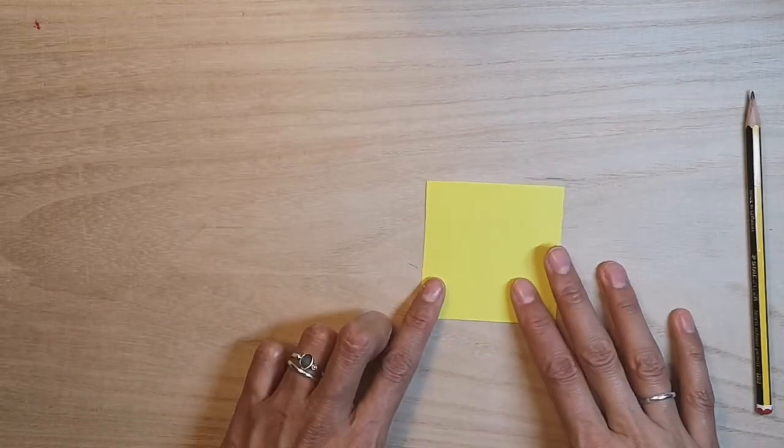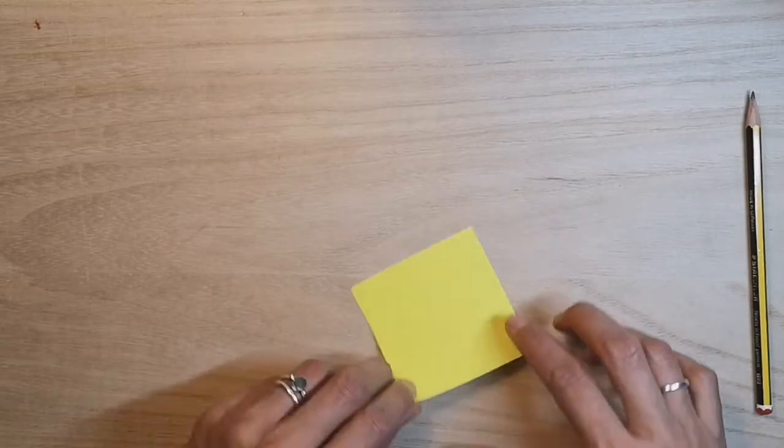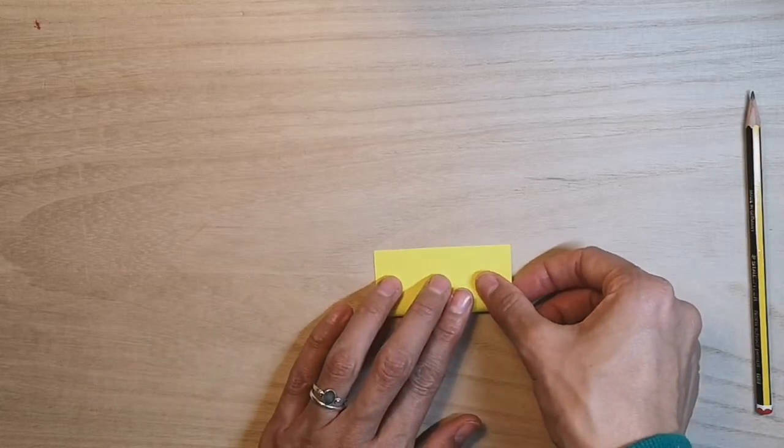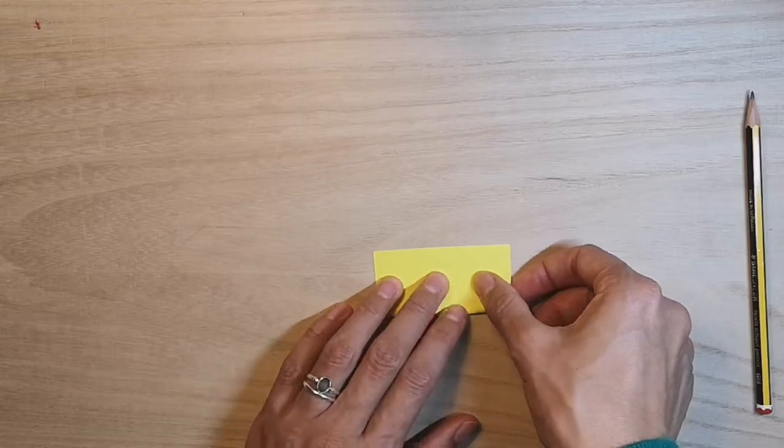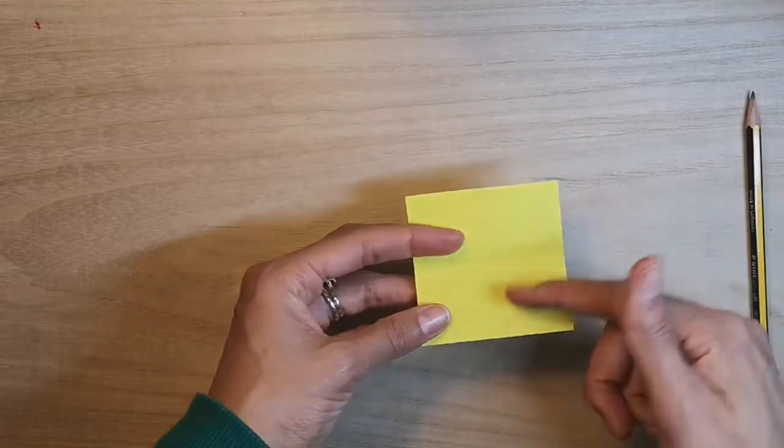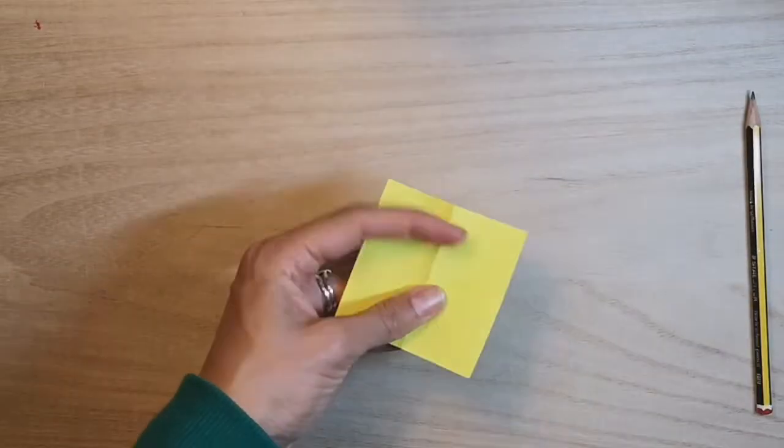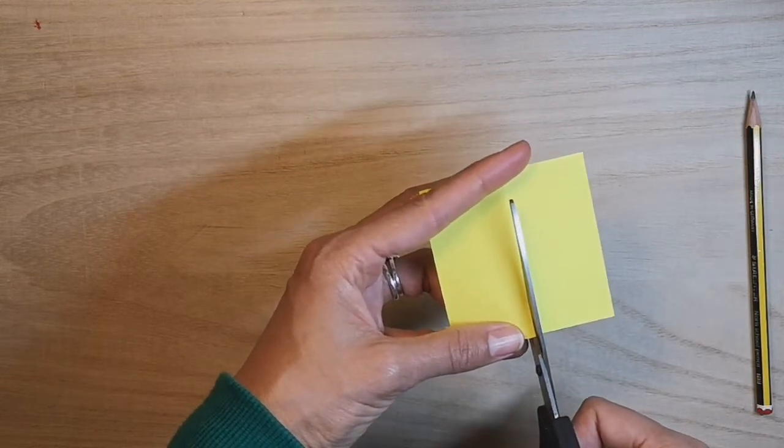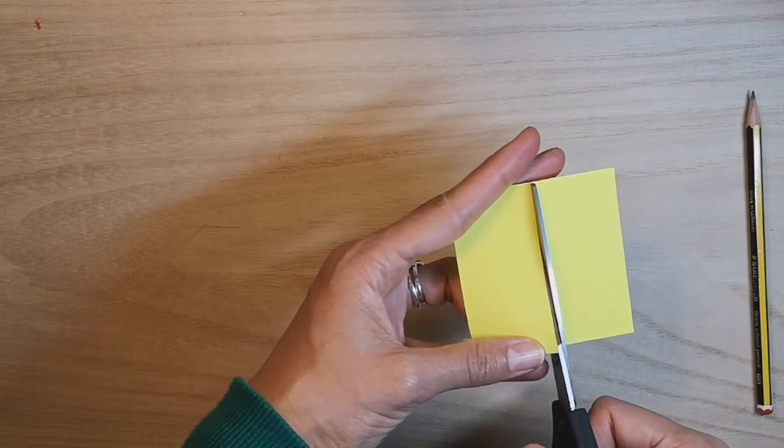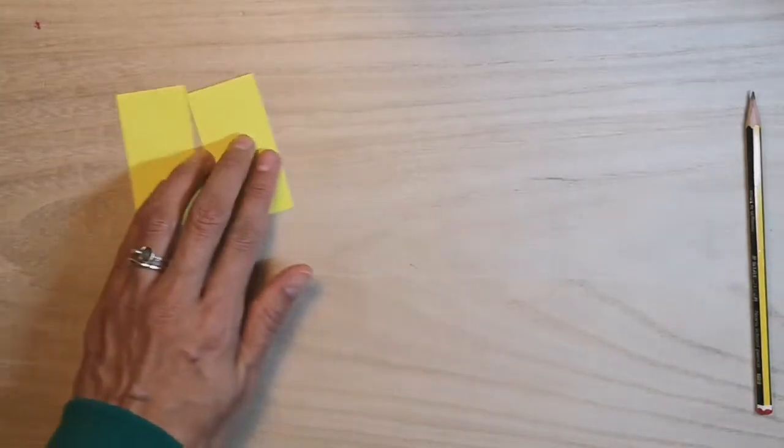The next step is to start folding our shapes into fractions. So I'm going to fold this shape in half. When I fold this square in half I get two rectangles. This will give me, when I cut them out, two lovely rectangles to start creating my shape art.